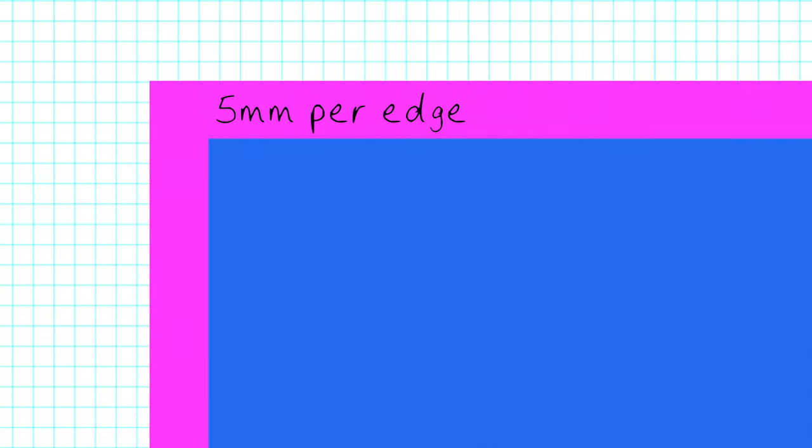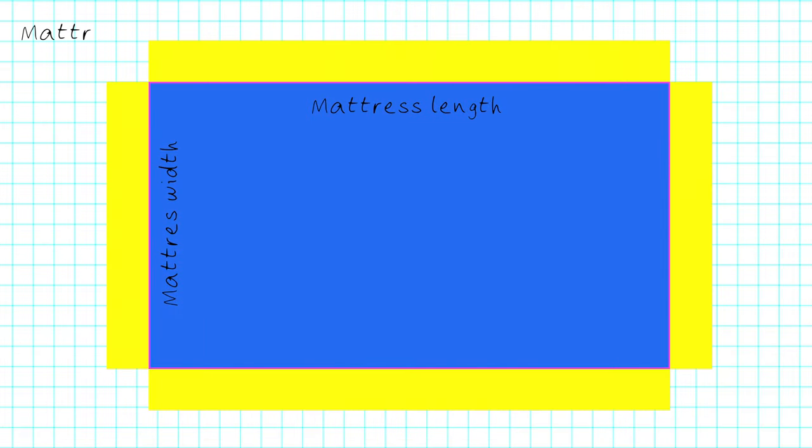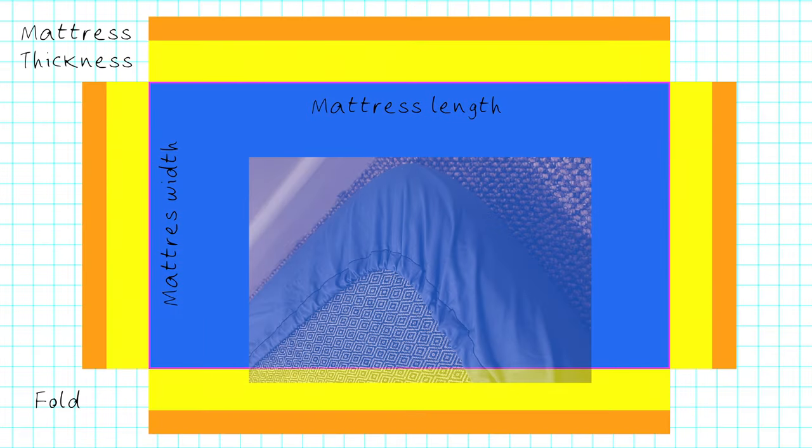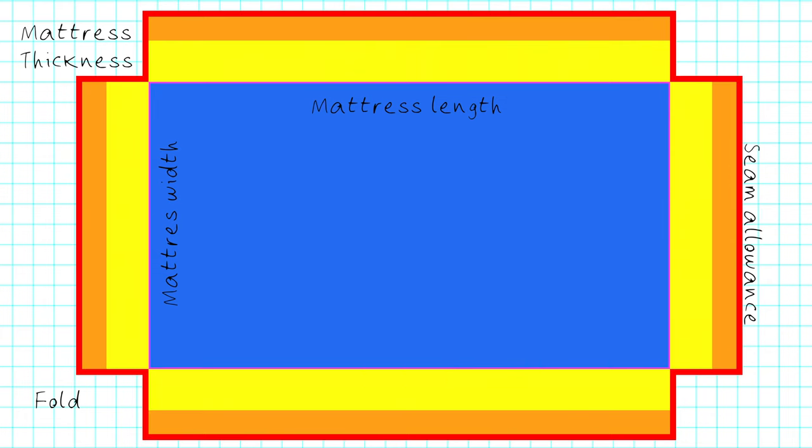Grab some paper and draw a rectangle that represents the length and width of your mattress plus 10 millimeters. For each edge add the thickness of the mattress plus how far you want the sheet to fold underneath plus 20 millimeters for seam allowance.